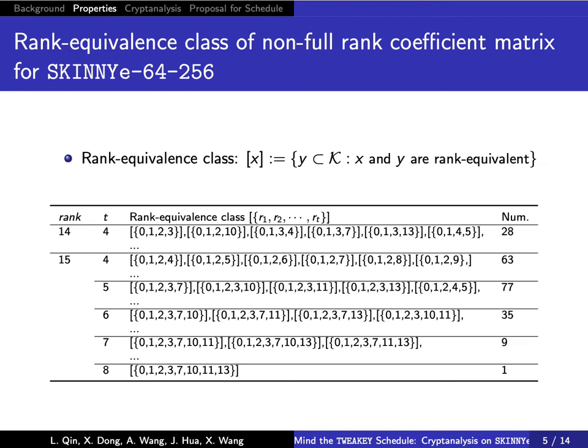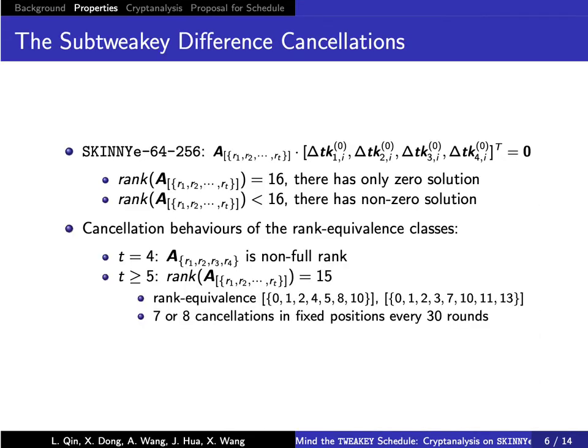We find that when T is greater than or equal to 4, certain sets of indices will lead to a non-full rank coefficient matrix. We then count all different rank-equivalent classes of non-full rank.